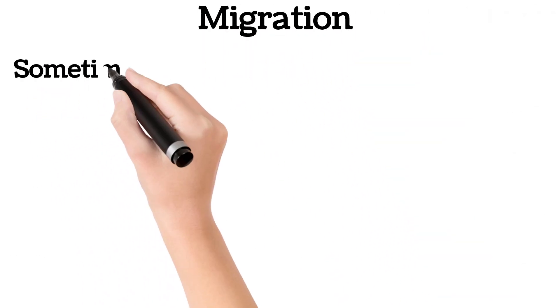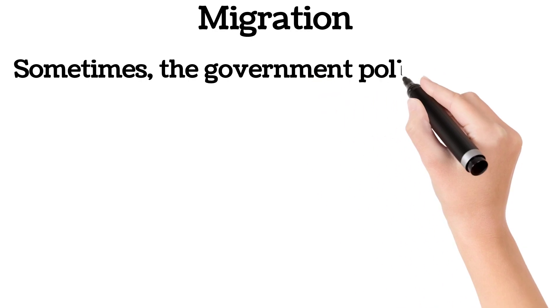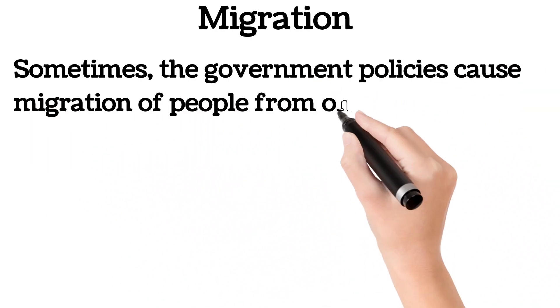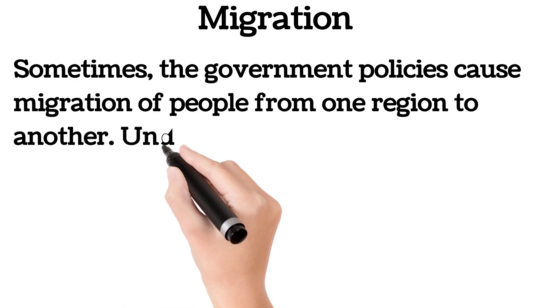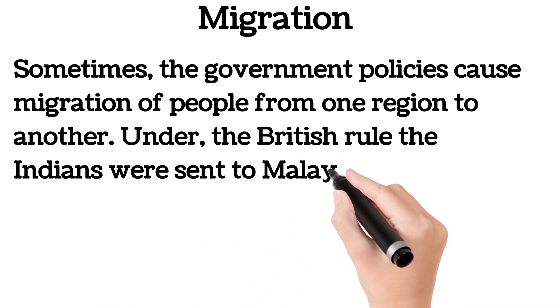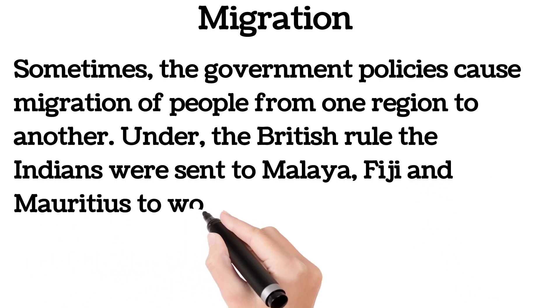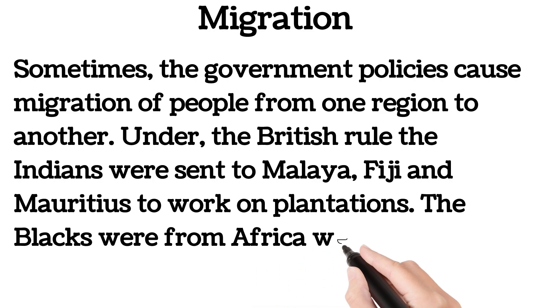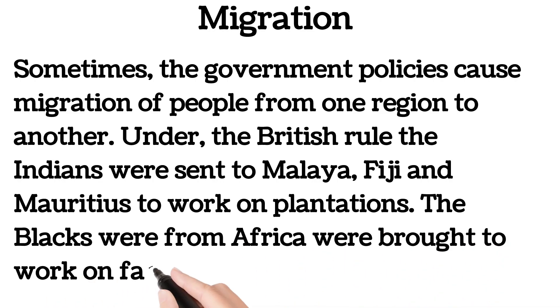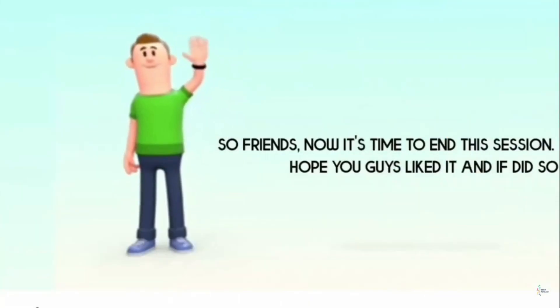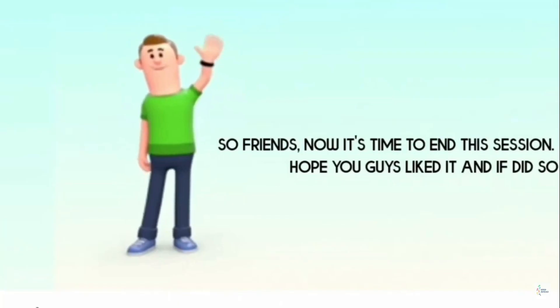Migration: sometimes government policies cause migration of people from one region to another. Under British rule, Indians were sent to Malaya, Fiji, and Mauritius to work on plantations. Blacks from Africa were brought to work on farms in America.